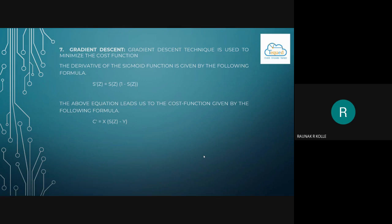Gradient descent. Gradient descent technique is used to minimize the cost function. The derivative of sigmoid function is given by the following formula: s dash of z equal to s of z times 1 minus s of z. The above equation leads us to the cost function given by the following formula: c dash equal to x times s of z minus y. These were some detailed mathematical relations with respect to the classification.